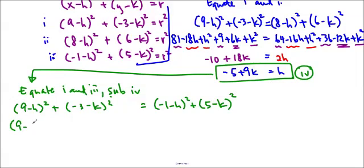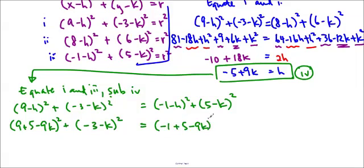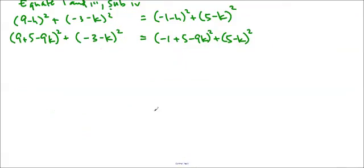Plus 5 minus K squared, and now I'll substitute in this for H, so 9 minus negative 5 plus 9K, so plus 5 minus 9K. If you want to put in brackets, you can, but I just don't. I just changed the signs, so negative 1 plus 5 minus 9K squared, plus 5 minus K squared. And I'll send the page there.